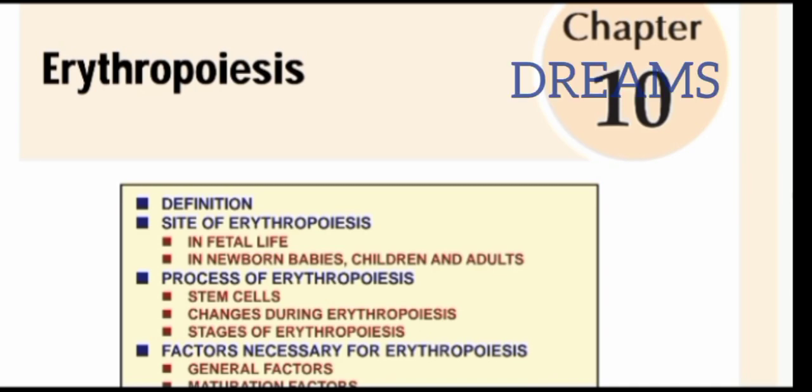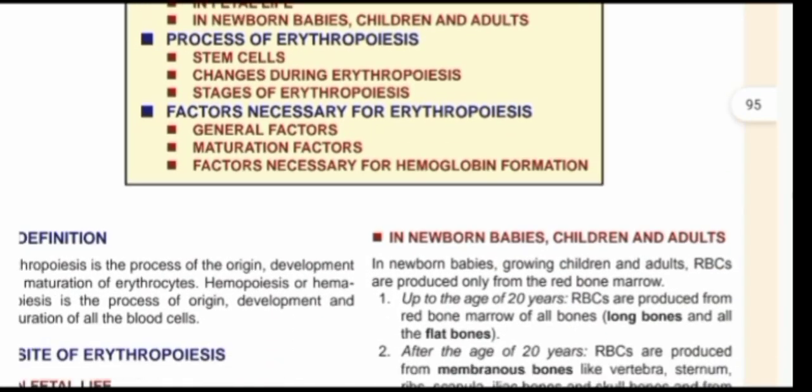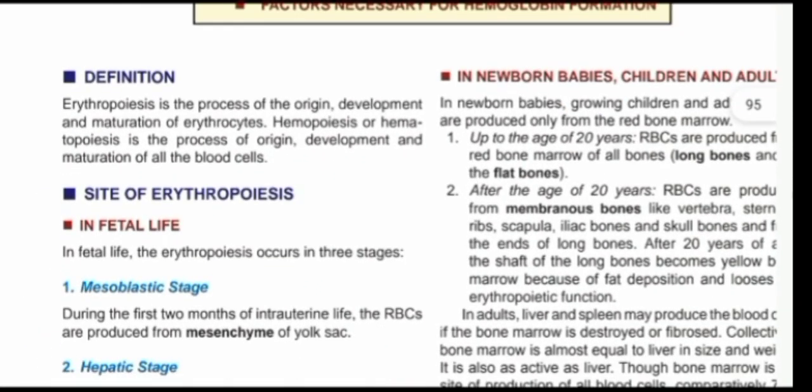Erythropoiesis has to do with the production of red blood cells, which are called erythrocytes. So when you are producing erythrocytes, that process is called erythropoiesis. But for study purposes, it's not just the production — it covers the origin, the development, and the maturation of the erythrocytes, not just the production of the red blood cells.